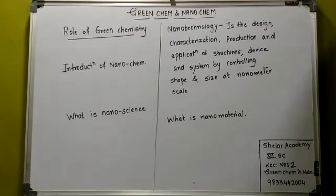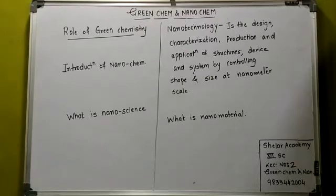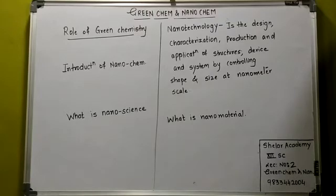What does nano mean in chemistry? It means 1 billionth — that is, 10 to the power of minus 9 — and it is frequently encountered in science and electronics for prefixing units of time and length. Nanotechnology can enable sensors to detect very small amounts of chemical vapors. Various types of detecting elements such as carbon nanotubes, zinc oxide nanowires, or palladium nanoparticles are used in nanotechnology.